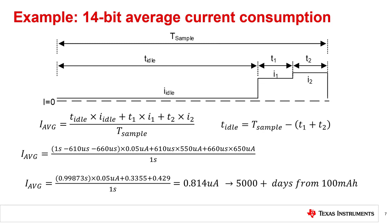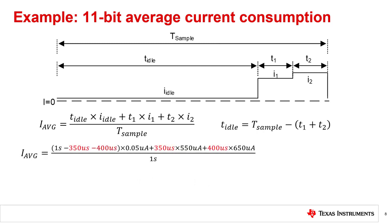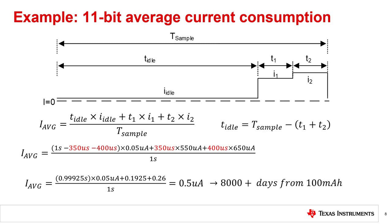Let's quickly take a look at how this result changes if we instead configure the device for an 11-bit read. To change our calculation to 11-bit, all we need to do is head back to the HTC2 datasheet and insert the typical values for 11-bit conversion time. We can again solve and simplify, and find that the current draw for 1 Hz in an 11-bit configuration is around 0.5 microamps, or 500 nanoamps. For comparison, this would correspond to more than 8,000 days from a 100 milliamp hour battery, or a 38% reduction in power consumption when compared to 14-bit mode.